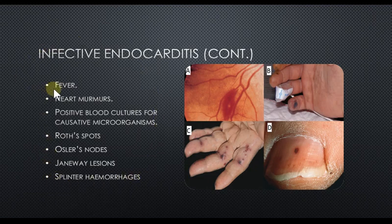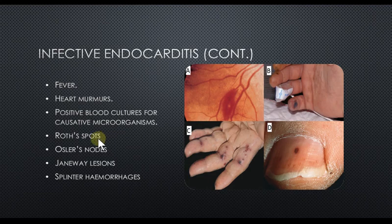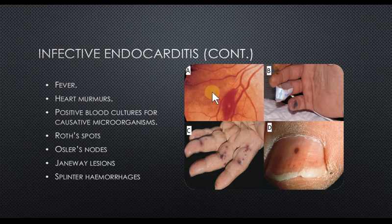Signs and symptoms of patients with infective endocarditis include high body temperature, fever, heart murmurs, and positive blood cultures for the causative microorganisms. There are also Roth spots, which are oval-shaped hemorrhages present on the retina.